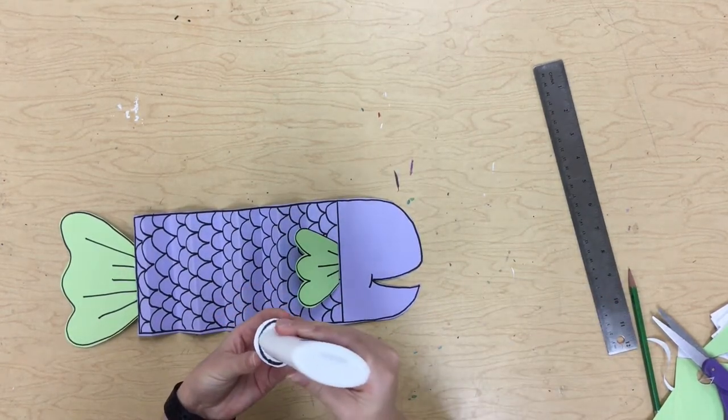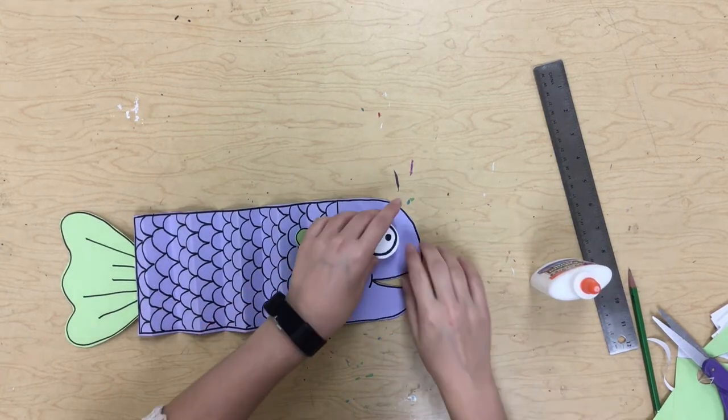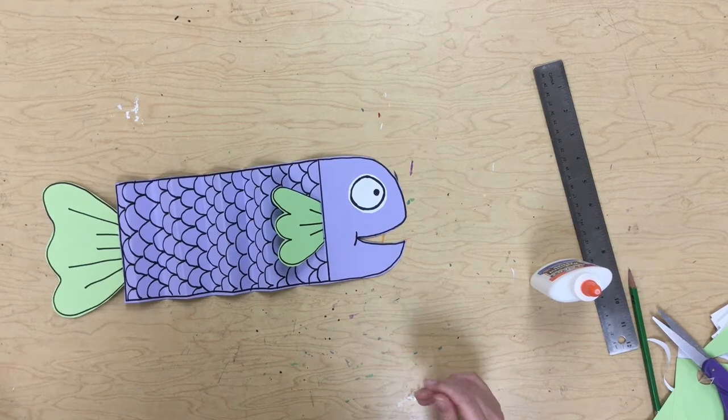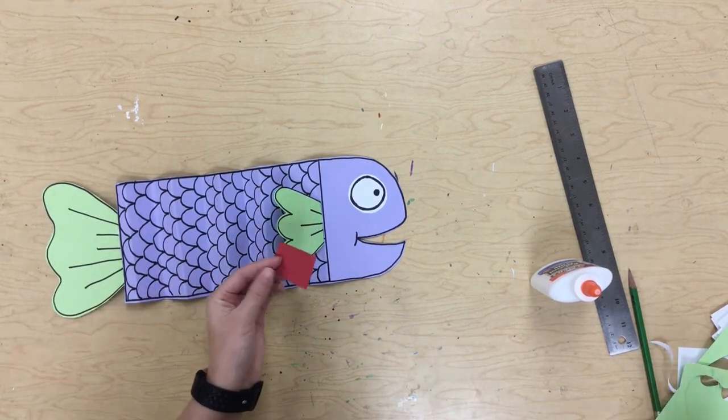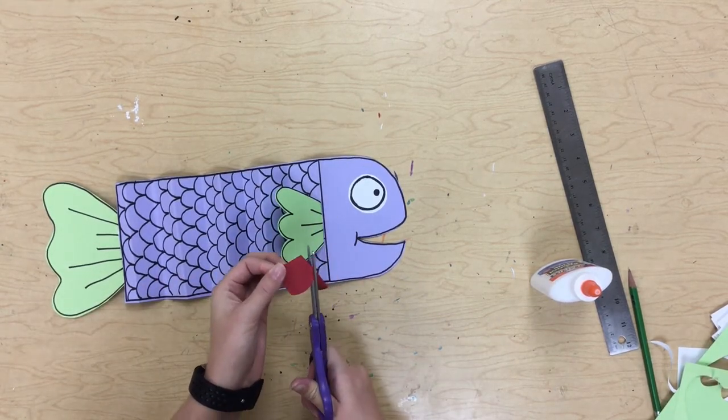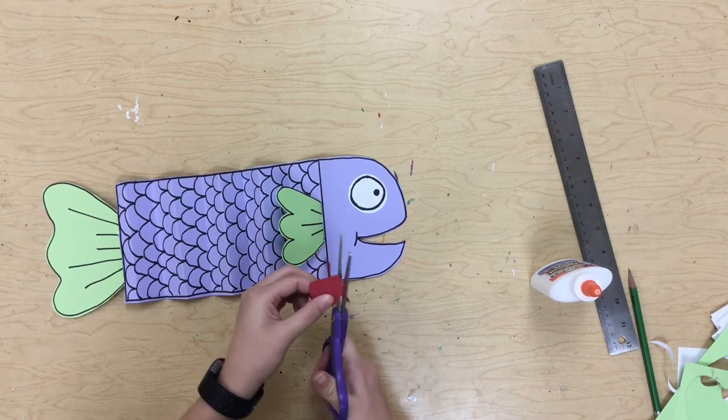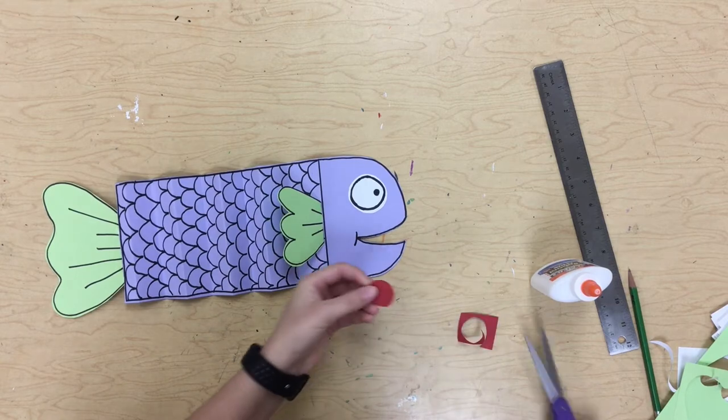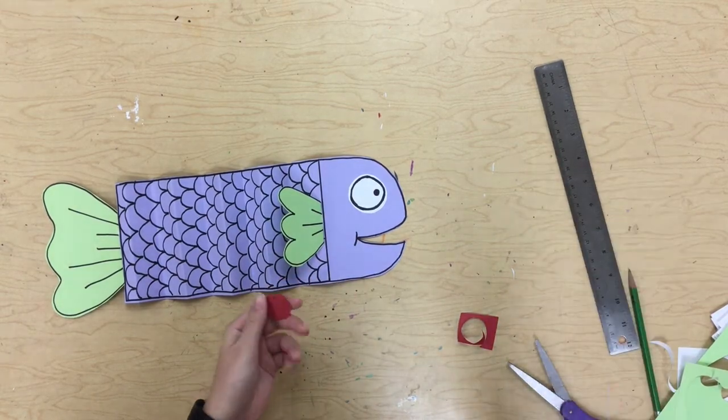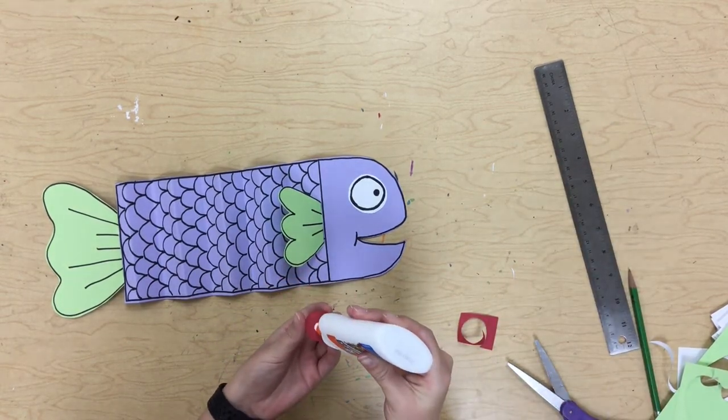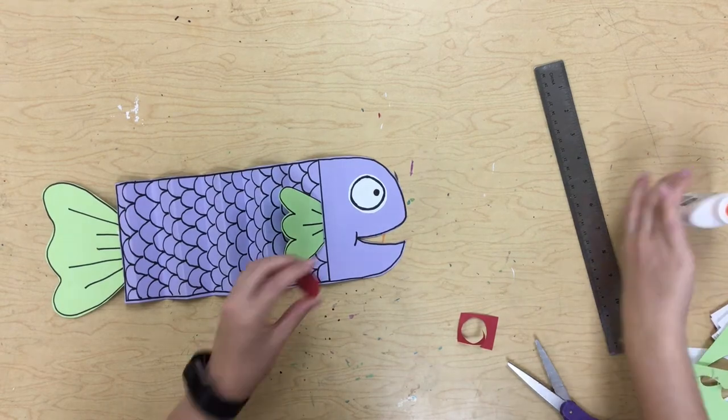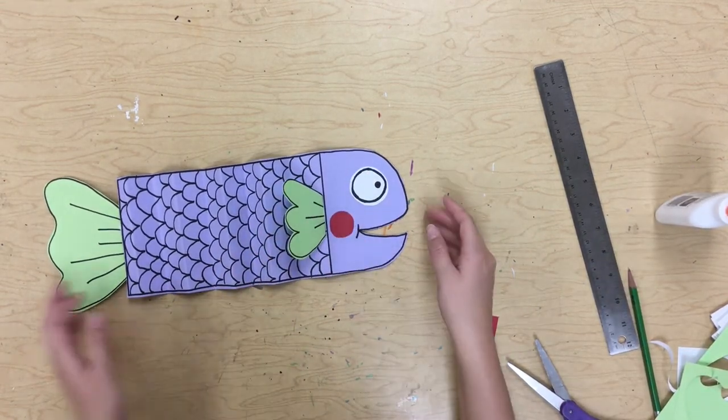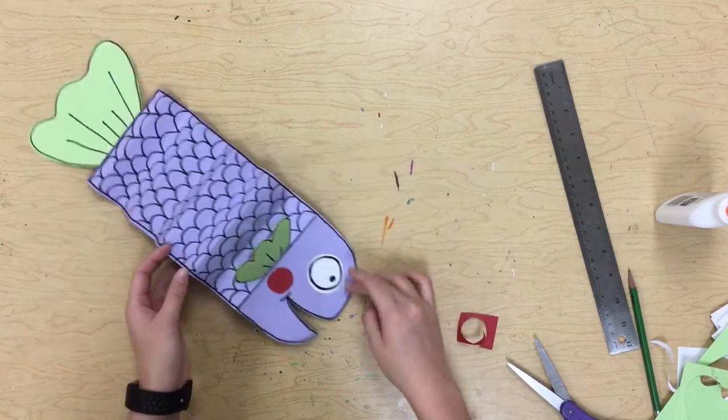Next, I'm taking his eye, making sure to put a little bit of glue on the back and glue that on. Last but not least, I think I want my fish to have a little bit of rosy cheeks. So I'm going to take this little red square right here, curve off those corners, cut it into a little circle. Then, put a little dot of glue on the back. Perfect. And give him a little rosy cheek. And there's my finished fish.